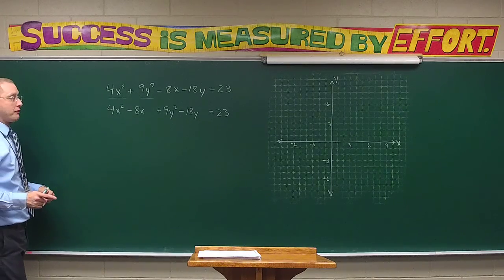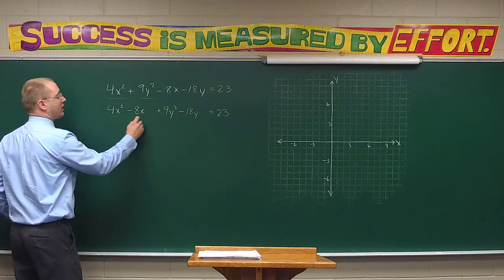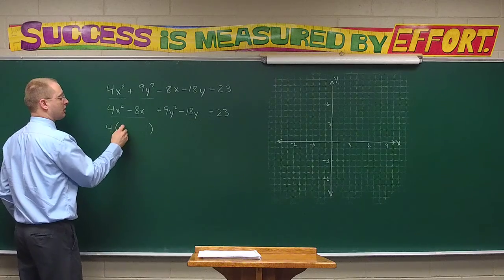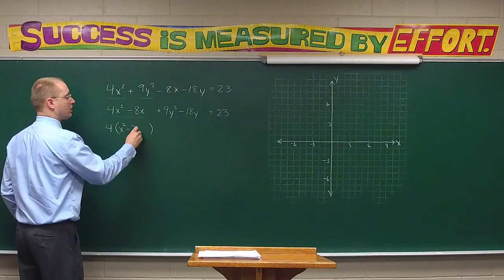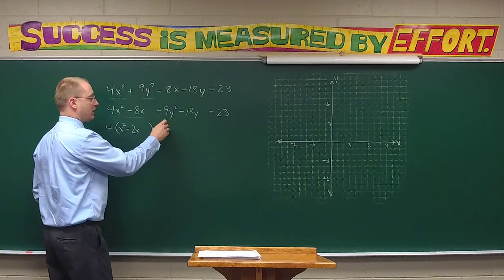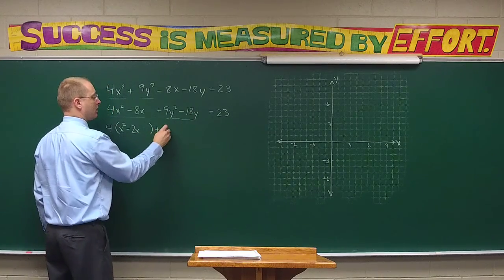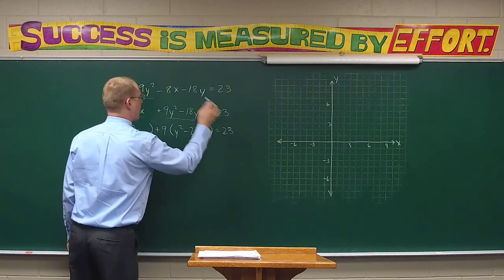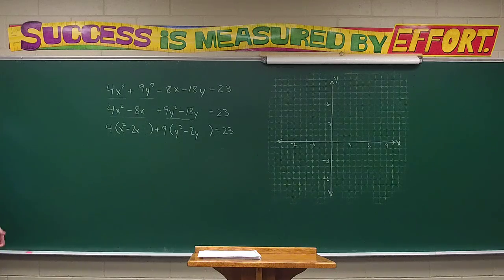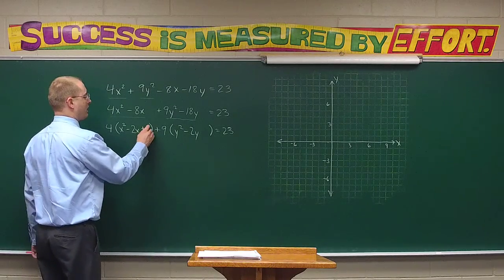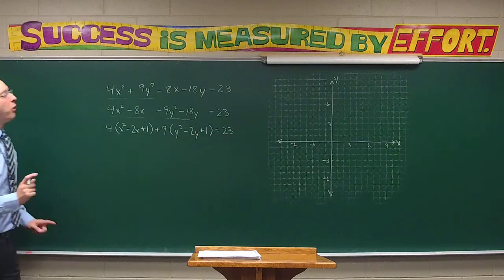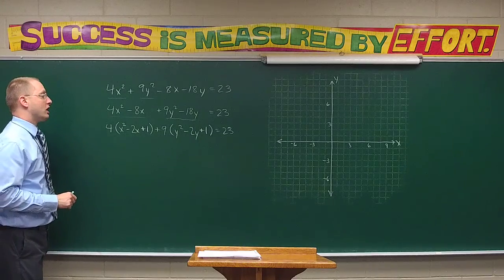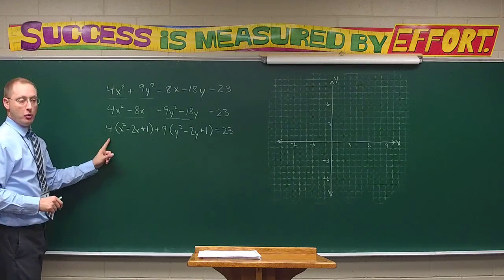We're going to factor off the coefficient of the squares. We'll factor here — a times... and leave that space — equals 23. And what do we put in those spaces? One and one, positive. Again, anytime we complete the square, what do I add to the other side?